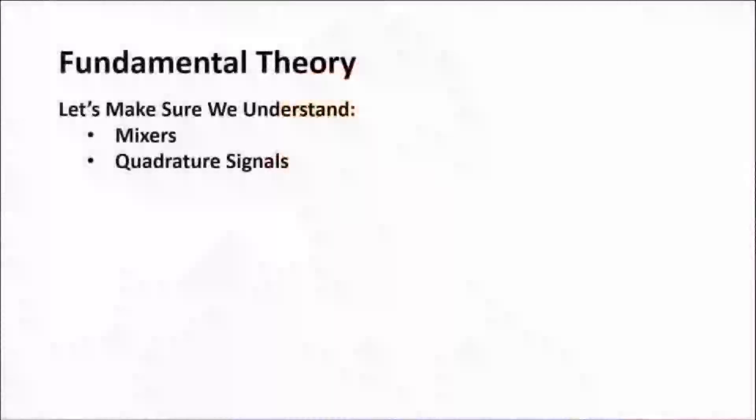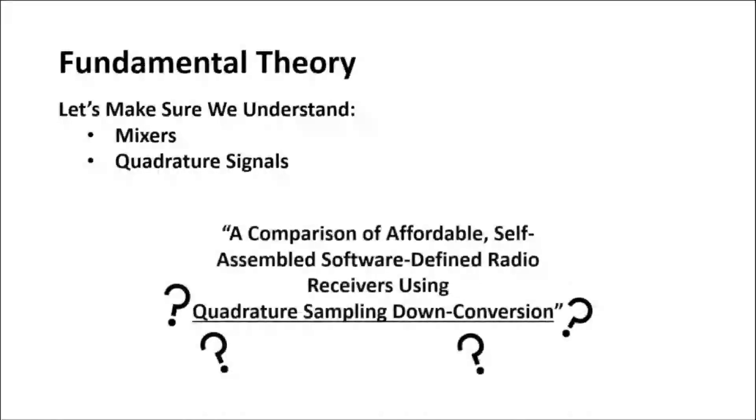We'll get into the theory first so that we get some terms and basic understanding set for what the paper goes over. We want to make sure that we all have a basic understanding of mixers and quadrature signals. Once we understand that, we'll be able to figure out what I consider to be the hardest line of the title of our paper: using quadrature sampling down conversion, which just sounds like a bunch of techno mumbo jumbo if I've ever heard it.